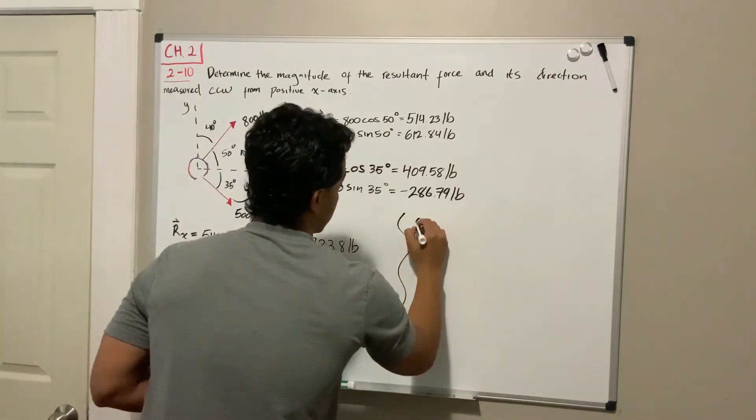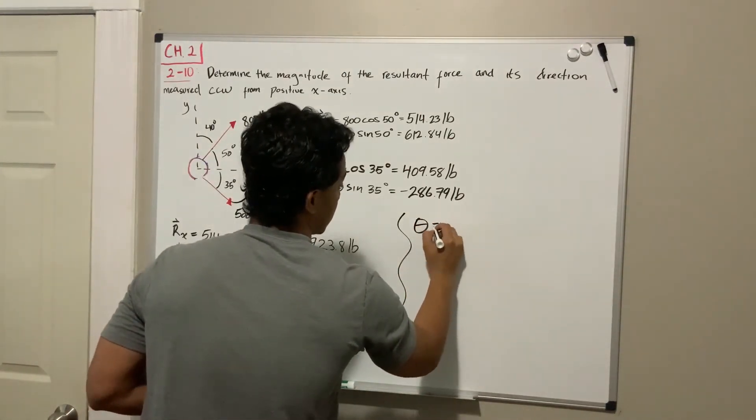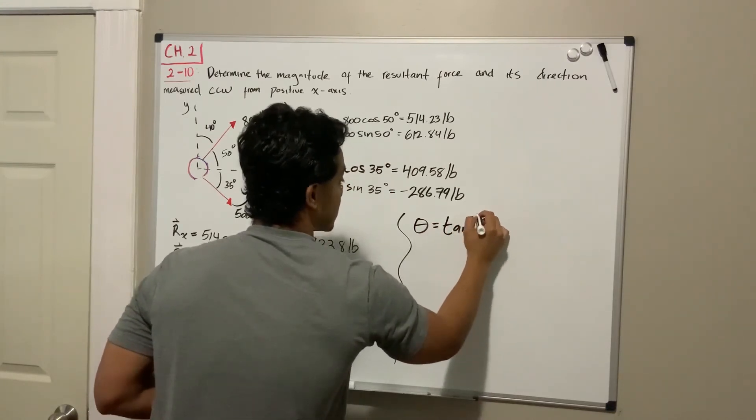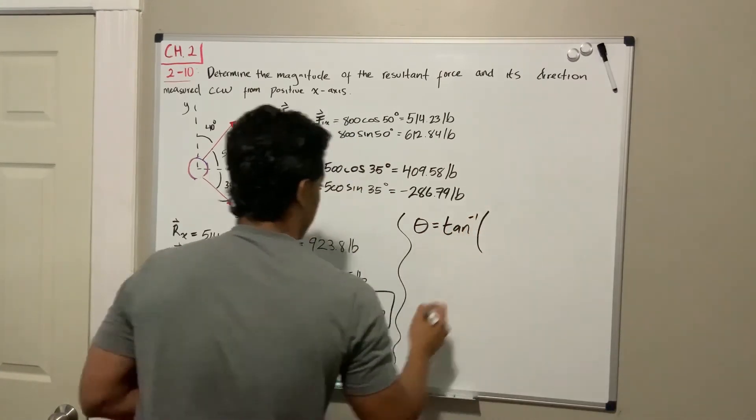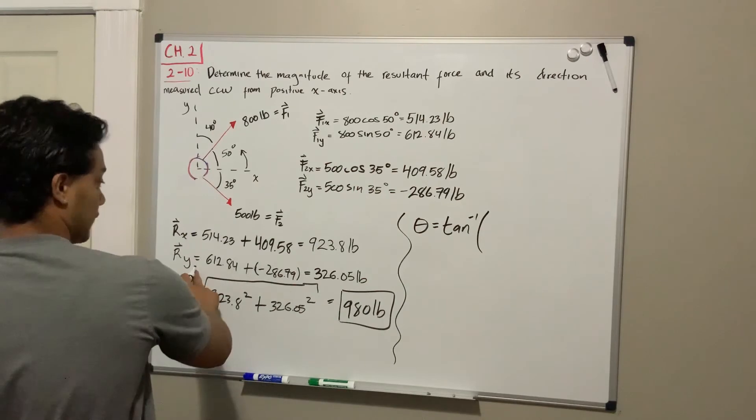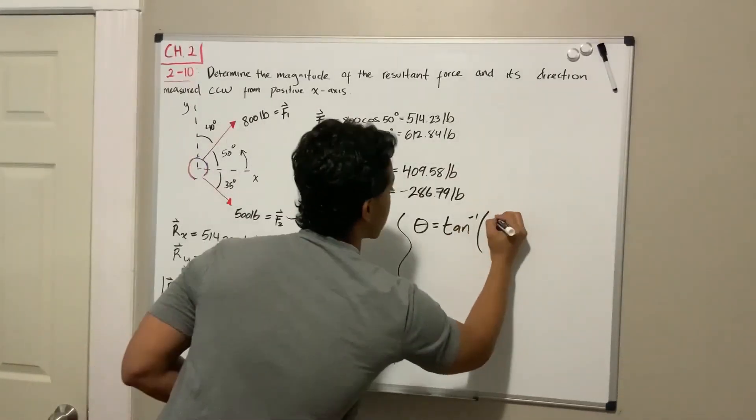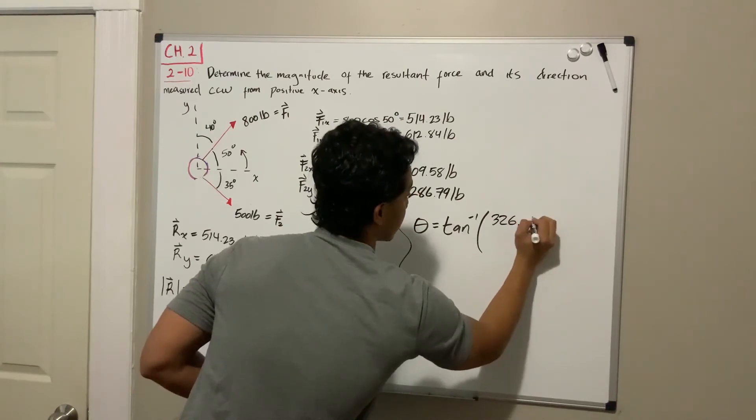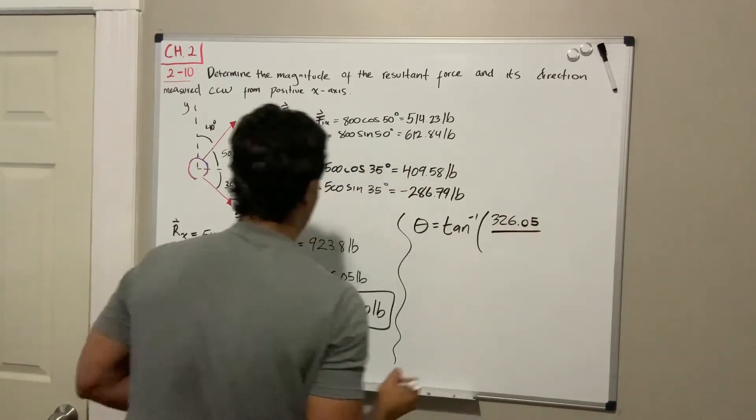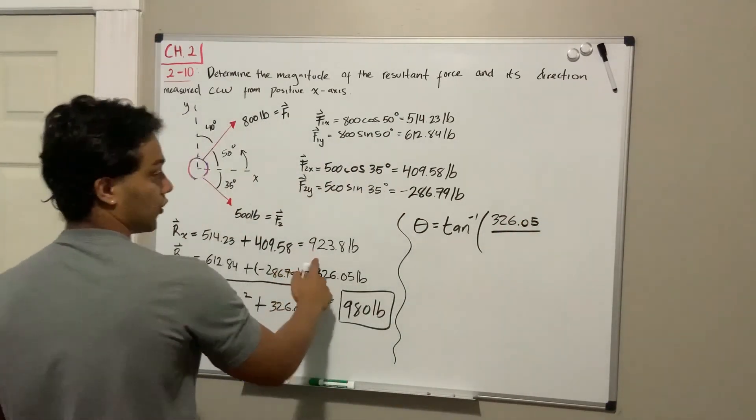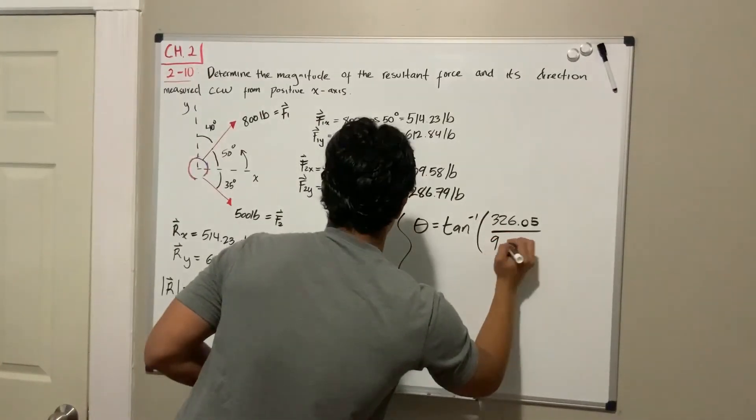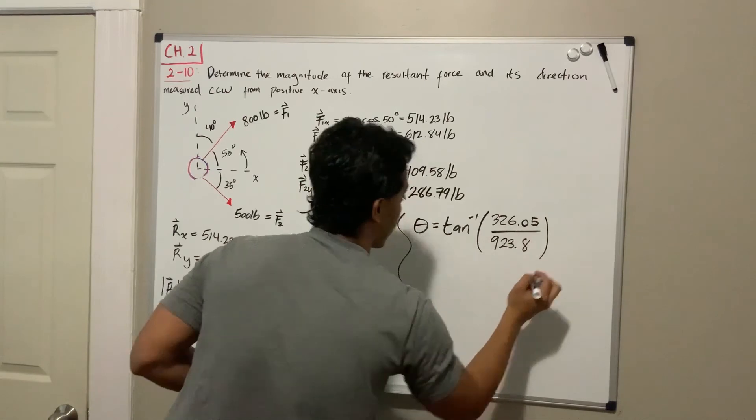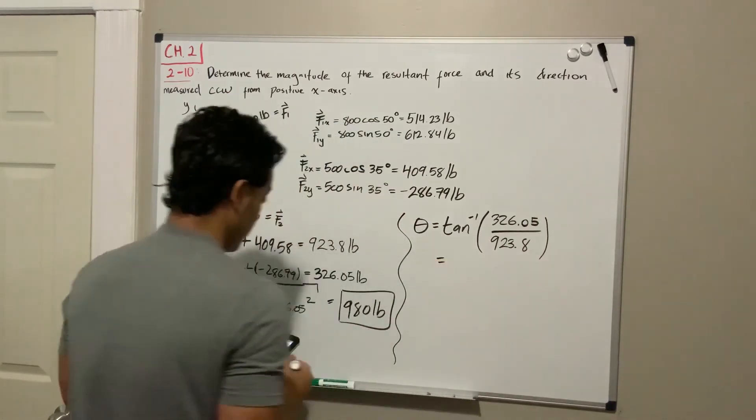So the angle theta is going to be equal to the inverse of the tangent of the opposite, which is its y value, so 326.05 divided by 923.8, which is equal to 19.4 degrees. And this is our second answer.